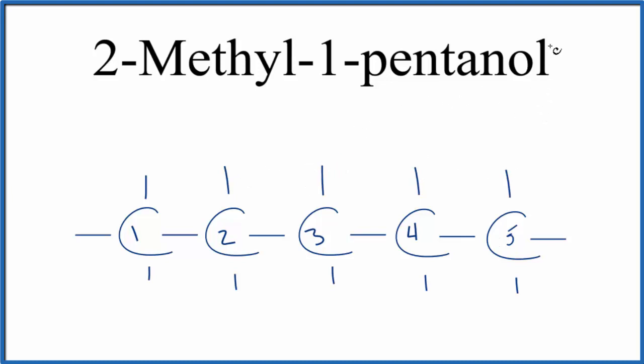So to make it pentanol, we need to put that O-H group on the first carbon. Let's put it right here. So right now we have one pentanol.